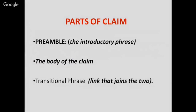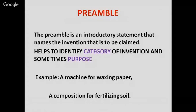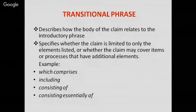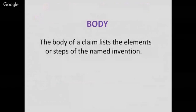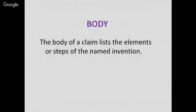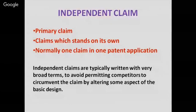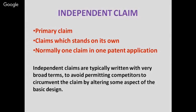Various parts of a claim include the preamble, the body, and the transitional phrase. The preamble is the introductory statement that names the invention and identifies the category or sometimes the purpose — for example, 'a machine for waxing paper' or 'a composition for fertilizing soil.' The transitional phrase describes how the body relates to the introductory phase — using elements like 'which comprises,' 'which includes,' 'consists of,' or 'consists essentially of.' The body of the claim lists the elements or steps of the named invention.